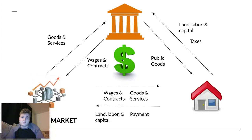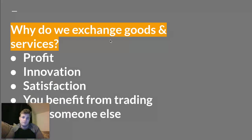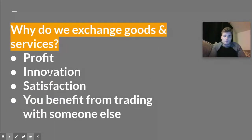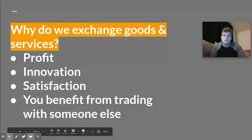At the center of this all is money. What this dollar sign means is that we do these things because every single group in this diagram expects to profit from trading with one another. They can either get profit in the form of money, innovation for new products or new ideas, or satisfaction for consumers like you and I. For example, if we want a Netflix documentary, we're going to request that a firm like Netflix produces a documentary that we might like. At the end of the day, you benefit from trading with someone else.